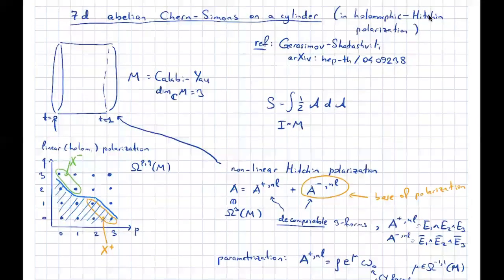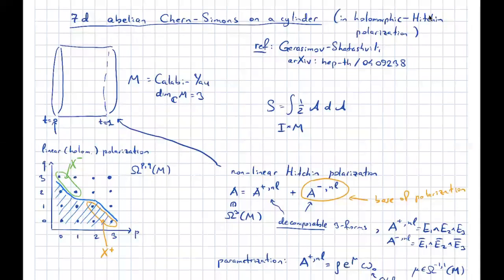As a final thing — and I don't want to say much partly because I confess I don't understand this example well enough — it was a motivating one so it deserves mention. One can consider seven-dimensional Abelian Chern-Simons theory on a cylinder: the integral over a seven-dimensional manifold of one-half ADA where A is a three-form. Put it on a cylinder — an interval cross a Calabi-Yau manifold of complex dimension three — so the total space has real dimension seven.